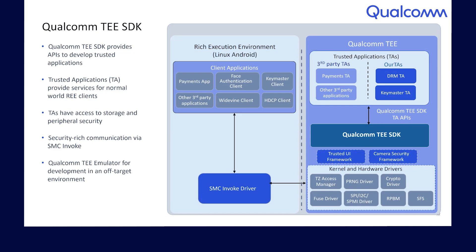Qualcomm TE supports a broad ecosystem of third-party trusted applications. With the Qualcomm TE SDK, customers can develop their own trusted applications with easy-to-use tools. The Qualcomm TE SDK provides APIs which third-party trusted applications can use to access various TrustZone security services such as storage security, cryptography, and security frameworks such as peripheral security and more. Protected communication between the HLOS client and trusted application is facilitated via the SMC Invoke transport layer. SMC Invoke interfaces are exposed to the HLOS client to communicate with the trusted application in the Qualcomm TE user space.